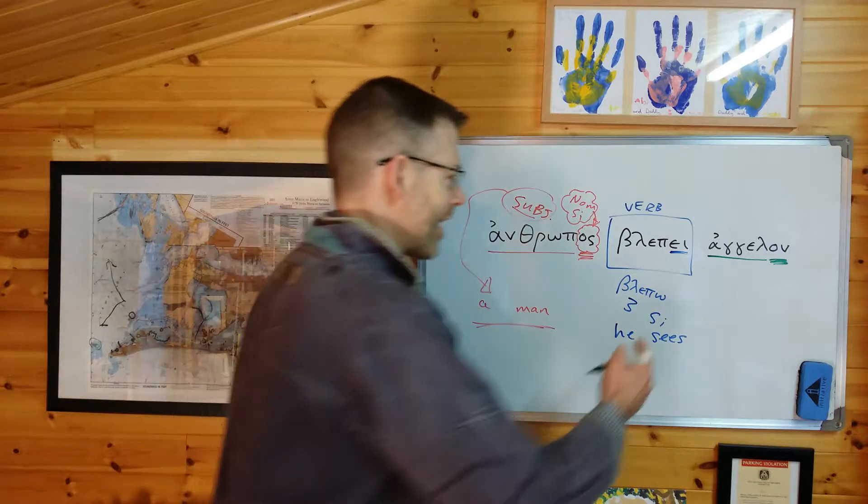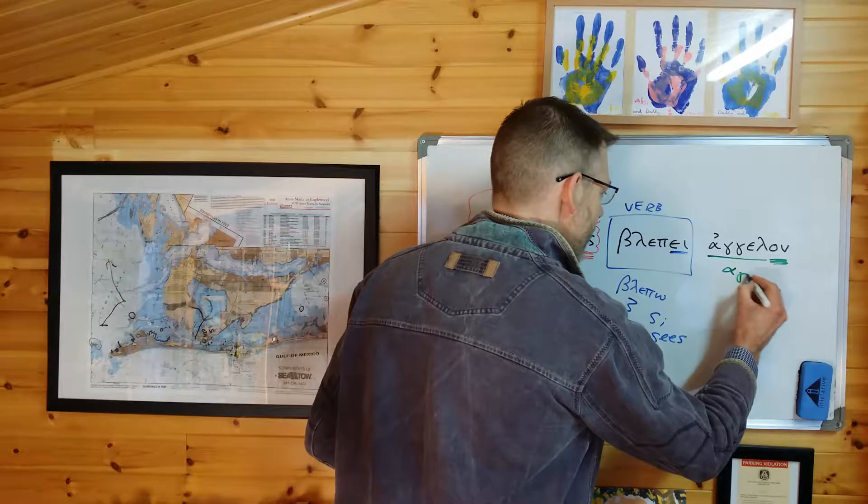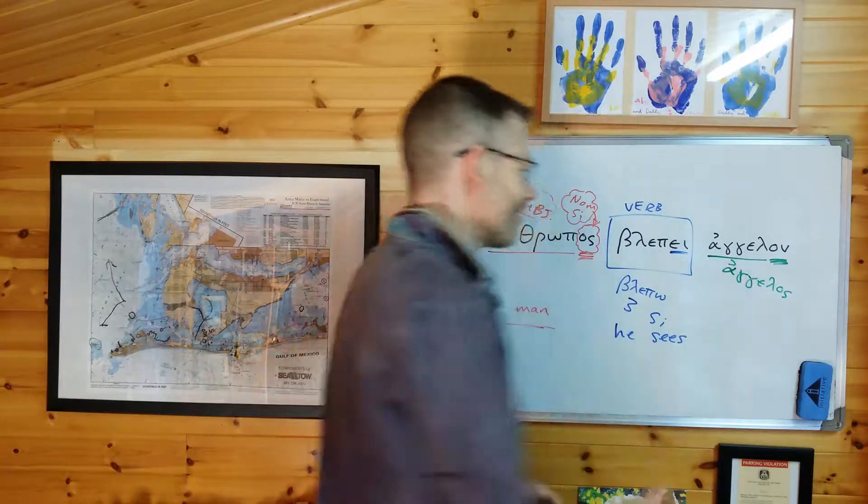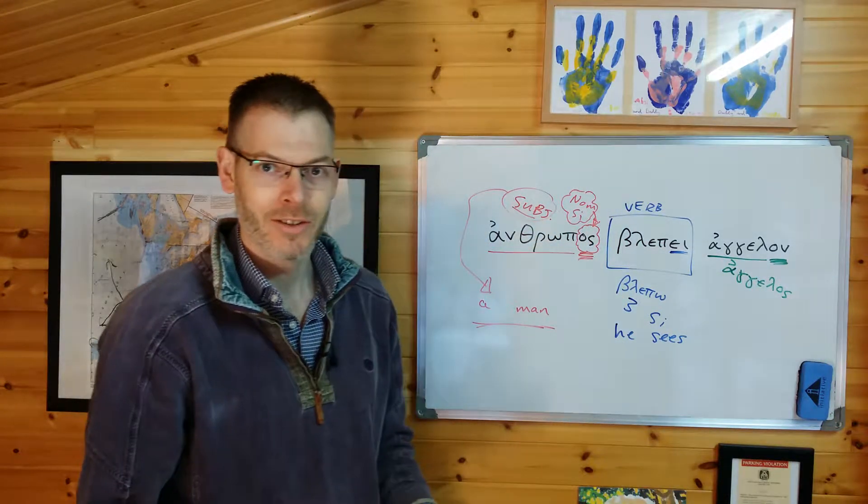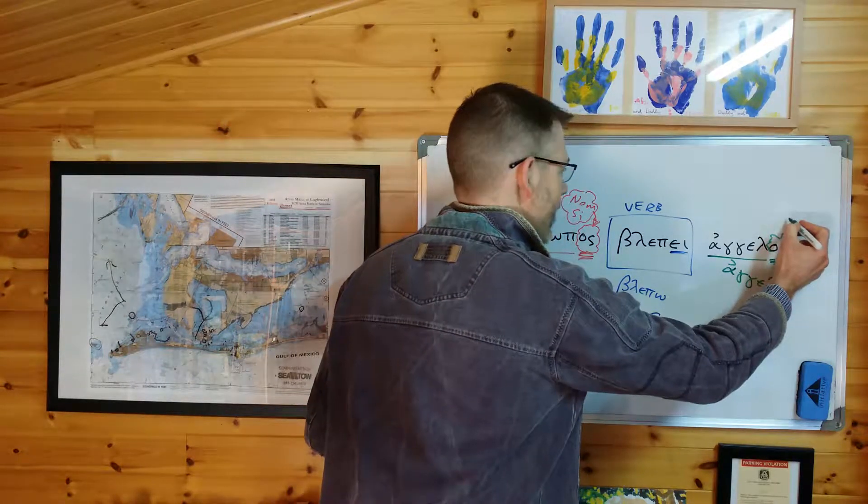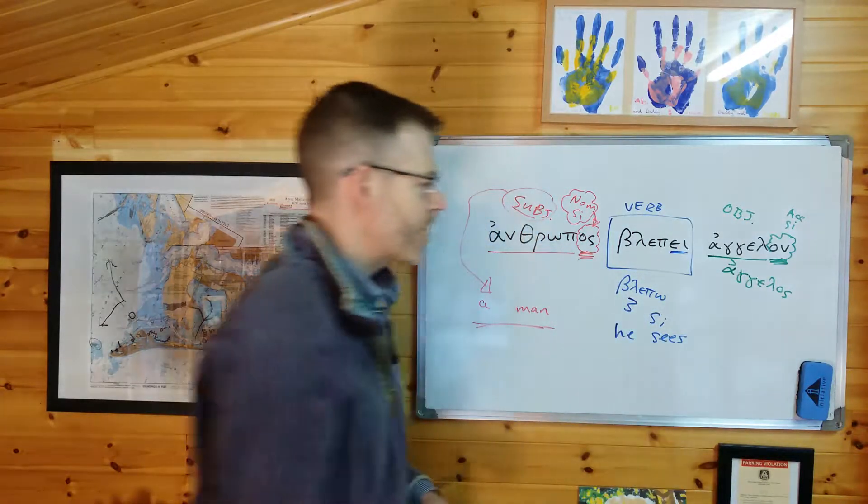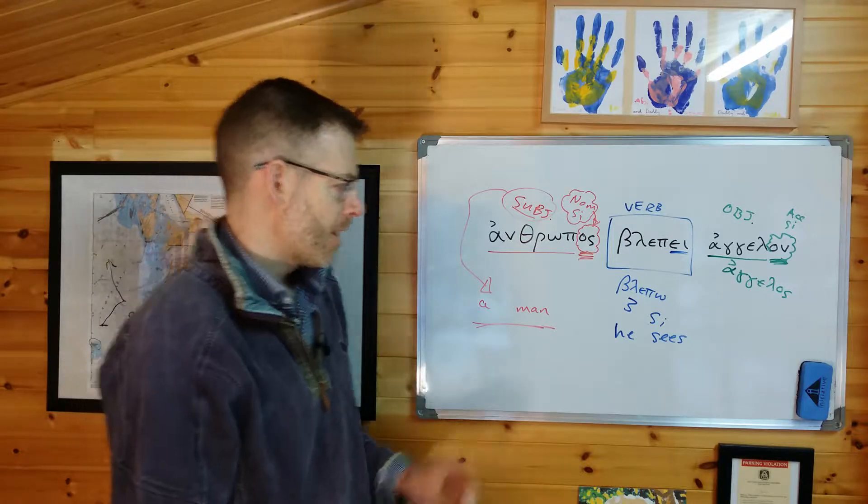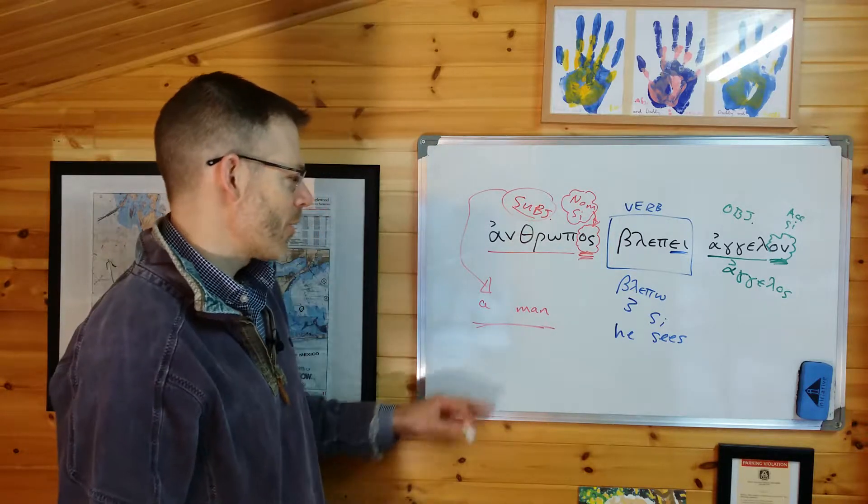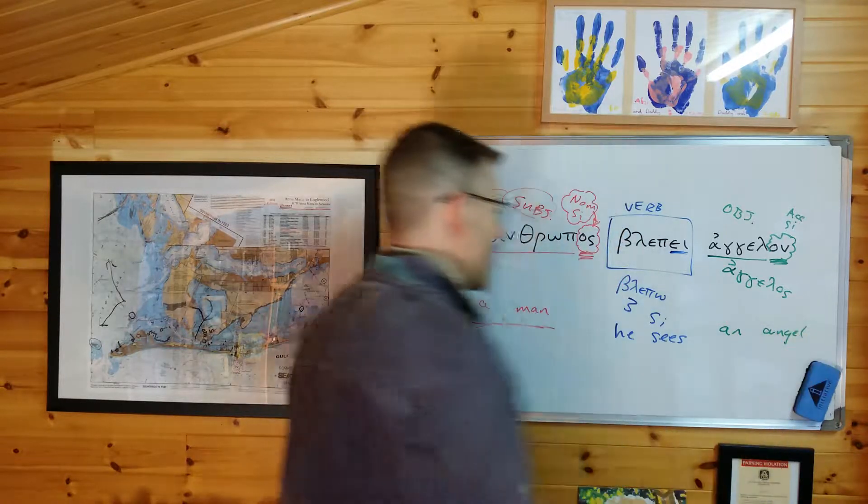And of course, lo and behold, what you find is another noun, angelos. Now this comes from angelon. Sorry, angelon comes from angelos, meaning an angel or a messenger. And the case ending here is on. This is accusative singular. That tells you it's the object of the verb. So what that means is in English, because English is a subject verb object language, we write a man sees an angel, like this.